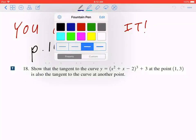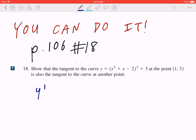Step 1, find the general slope. y' = 3(x² + x - 2)²(2x + 1).